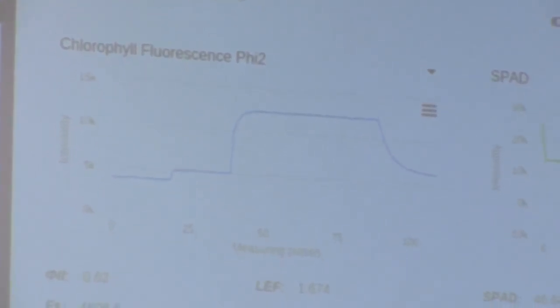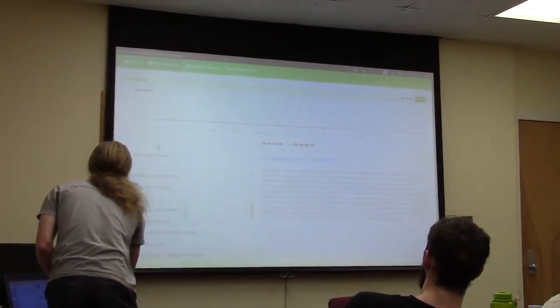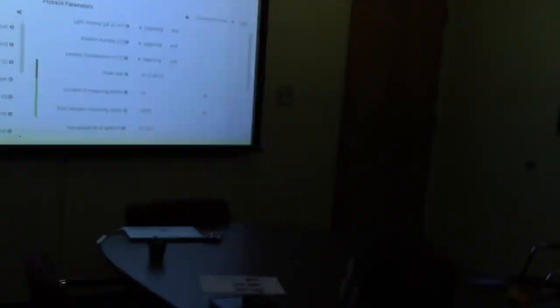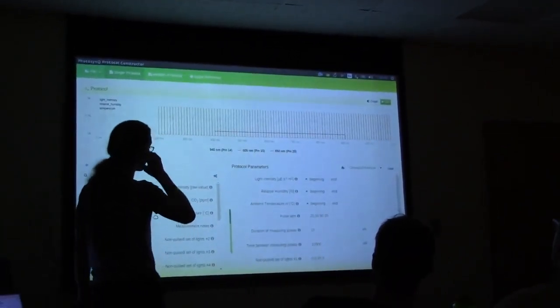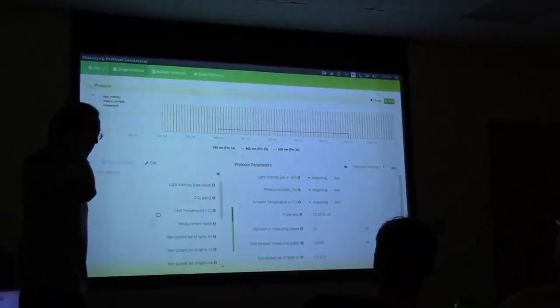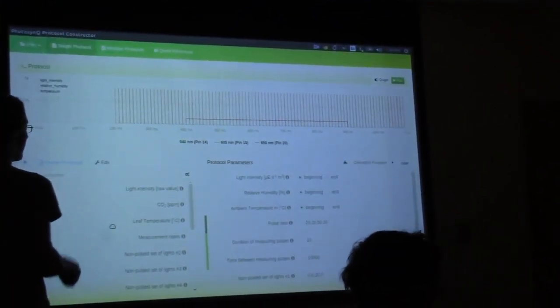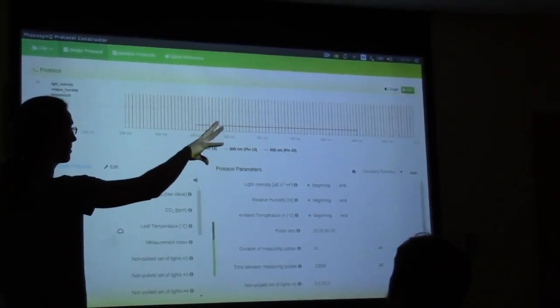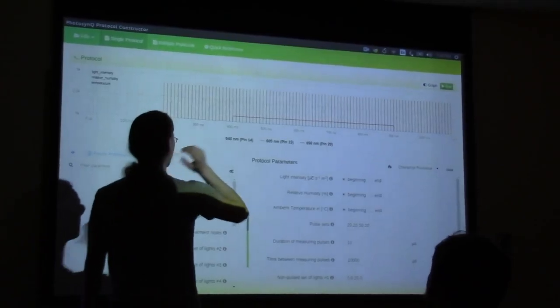In addition, you can actually create your own protocols. So these methods like FV over FM, Phi 2, and NPQ, there are tools in here for you to create them. So, for example, here's chlorophyll fluorescence. This has all the parameters that are going to define my measuring pulses, my saturating pulse, all that stuff. So if you're super geeky and you want to make your own stuff, you can do that.